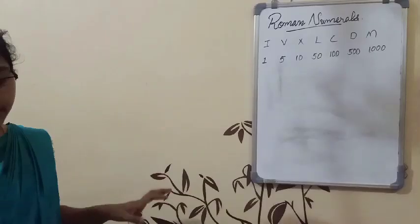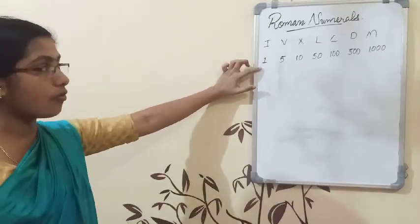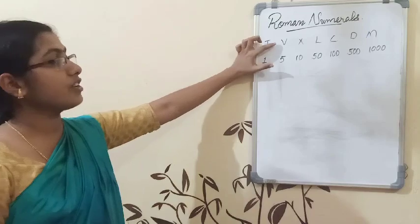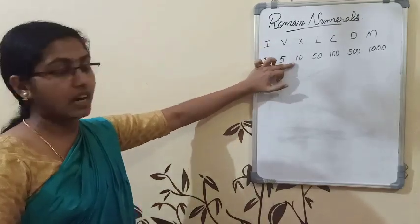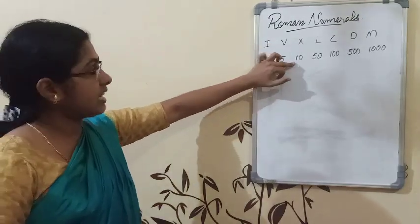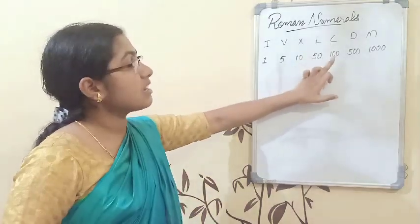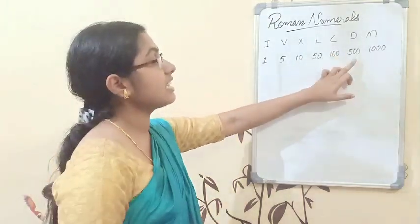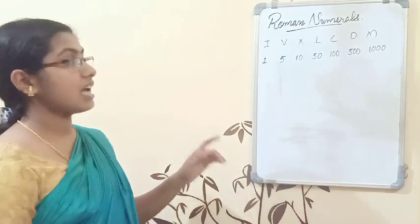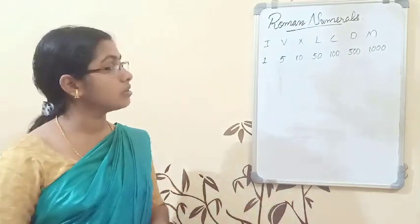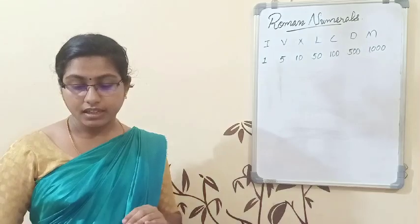To recap the Roman symbols and their values: I has value one, V has value five, X has value ten, L has value fifty, C has value hundred, D has value five hundred, and M has value thousand.